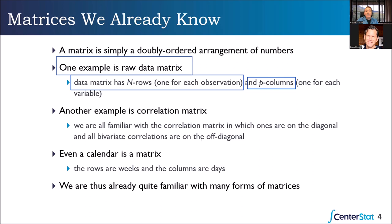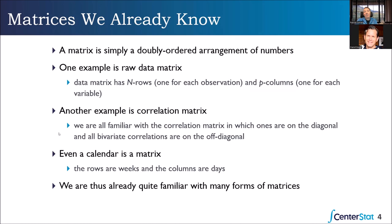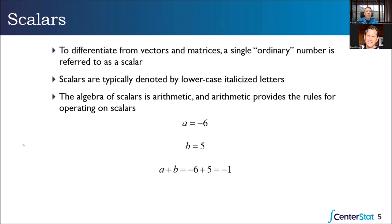We're all familiar with the correlation matrix — it's a square matrix because it's p-by-p, and it contains our correlations or covariances. And to get super basic: think about a monthly calendar. It is a doubly ordered arrangement of numbers — the rows represent the weeks, the columns represent the days. If you go into the interior of the calendar, you can find a particular day in a particular week. So we actually already know quite a bit about matrices.